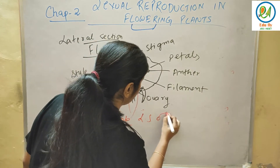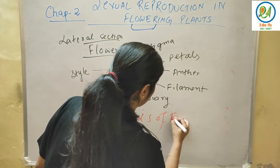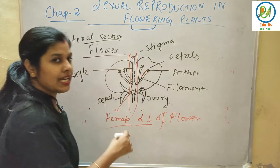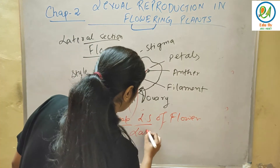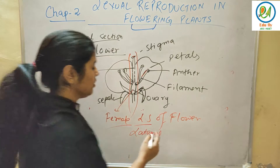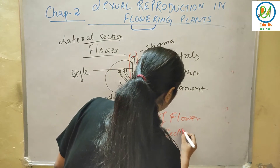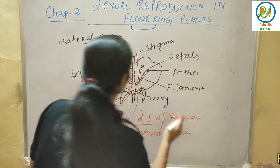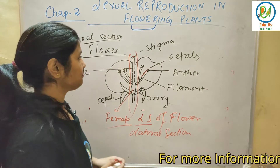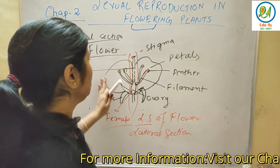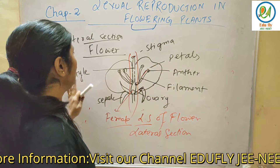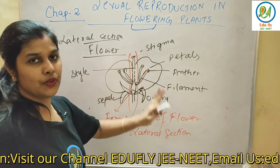This is the LS — lateral section — of the flower. When you cut a flower, this is what you see. This is the common diagram of the flower.